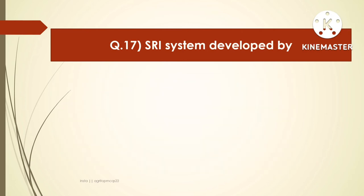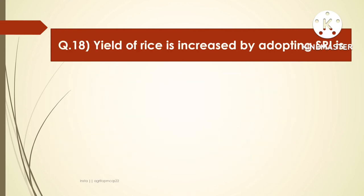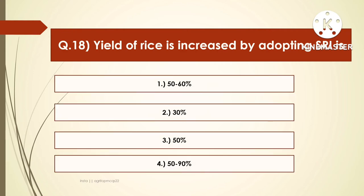The next question: SRI system was developed by — options are SD Lonier, SD Peter, MS Swaminathan, or Norman Borlaug. The right answer is SD Lonier. The next question: the yield of rice is increased by adopting SRI by — options are 50-60%, 30%, 50%, or 50-90%. The yield of rice is increased by adopting the System of Rice Intensification by 50 to 90%.